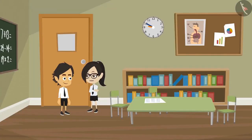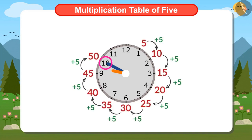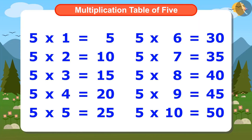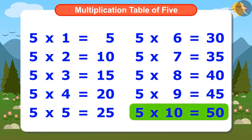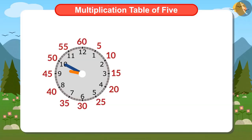If it is so easy, why don't you tell how many minutes the clock is showing? Look, the minute hand is on the 10 right now, which means it is 50 minutes. How? Look at the Multiplication Table of 5 — 5 times 10 is 50. I also know the Multiplication Table of 5, but I never thought it could be used to find the minutes.